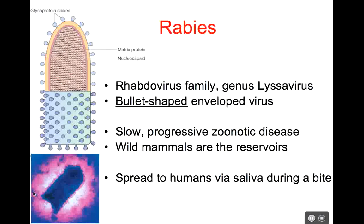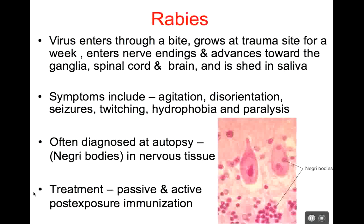The rabies disease is incredibly slow and progressive. It's going to start out at the tissue site and then slowly move through the nervous system, which is really unusual. A virus enters at a bite site, grows at that trauma site for a week or so, then slowly enters local nerve endings and advances towards the central nervous system — towards the ganglia, spinal cord, and brain. Then it will be shed in the human saliva, just like it was shed in the animal's saliva.